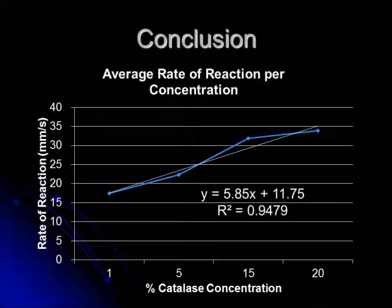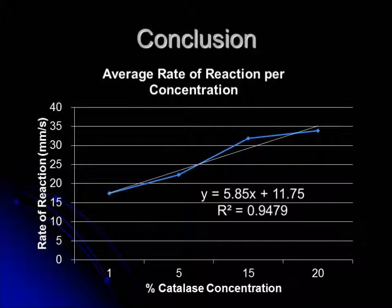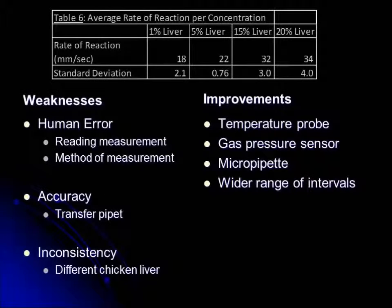The purpose of this lab was to determine the relationship between enzyme concentration and the rate of reaction. As seen in the videos for the different enzyme concentrations, the amount of bubbles formed in 5 seconds increased as enzyme concentration increased. This supports the hypothesis, which suggested that the relationship between enzyme concentration and the rate of reaction is directly proportional. The graph displaying the average rate of reaction shows this relationship.